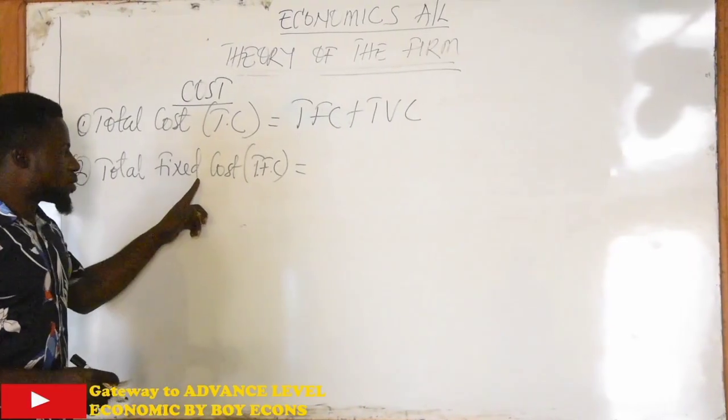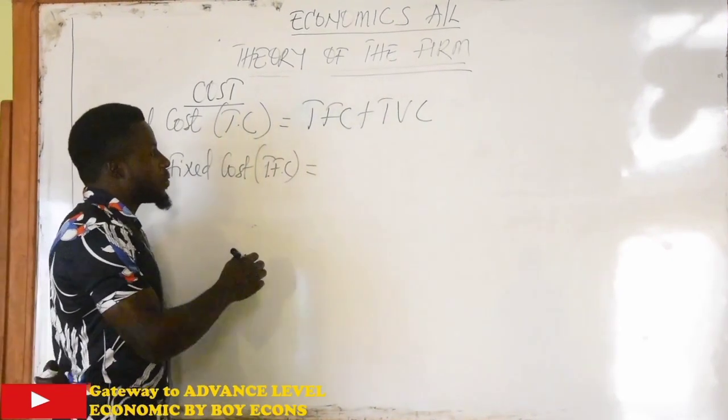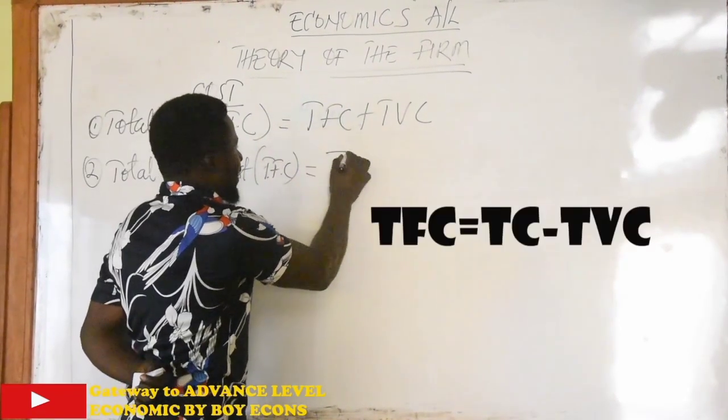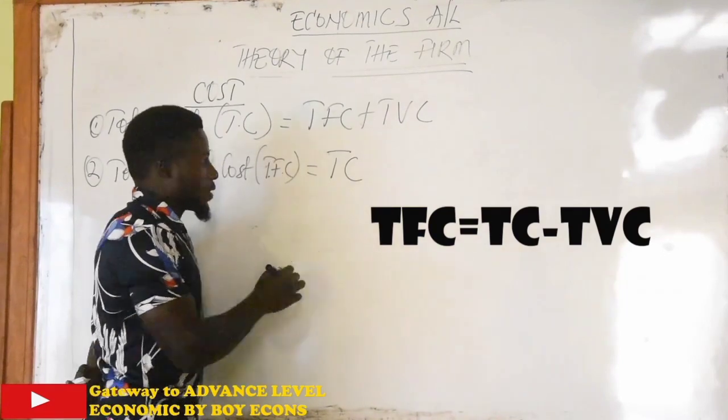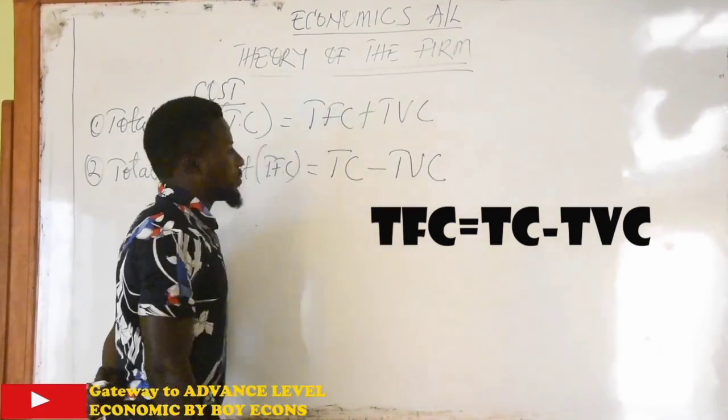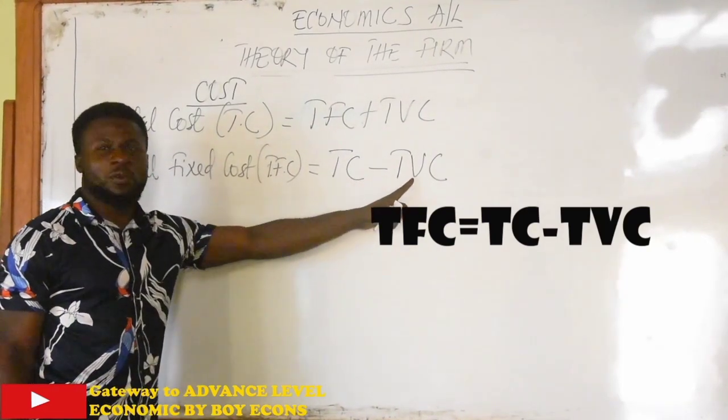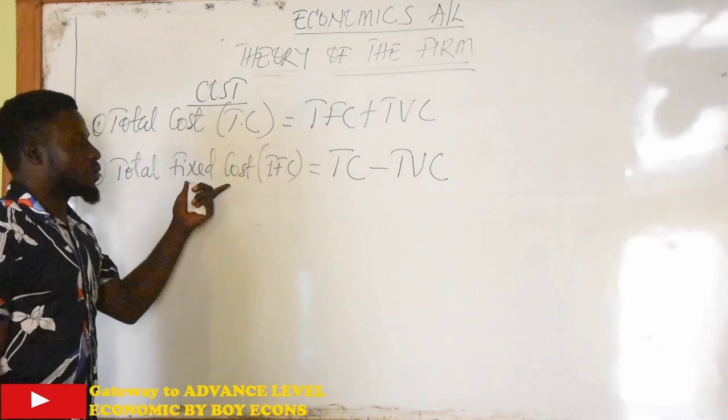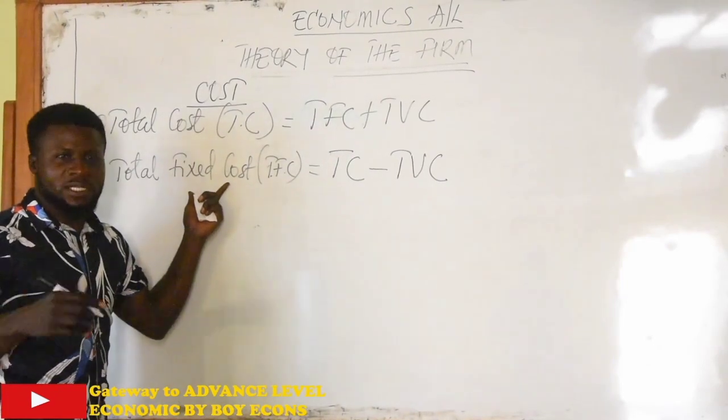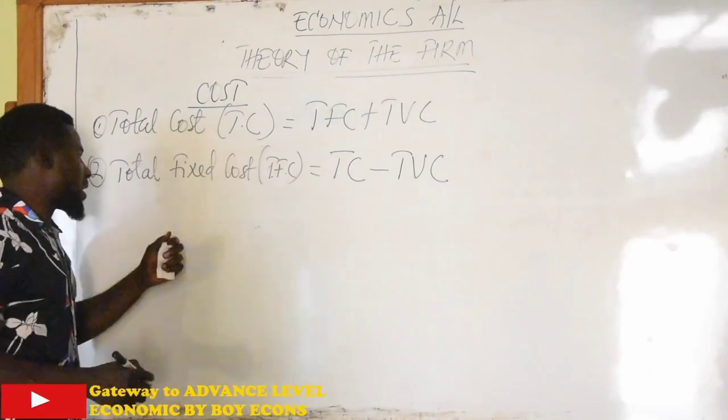So total fixed cost, as we have already heard the explanation, is simply calculated by taking our total cost minus our total variable cost: TFC = TC - TVC. So when you take your total cost and you subtract total variable cost from it, it gives you the total fixed cost, which is the expense you make on fixed factors of production such as land.